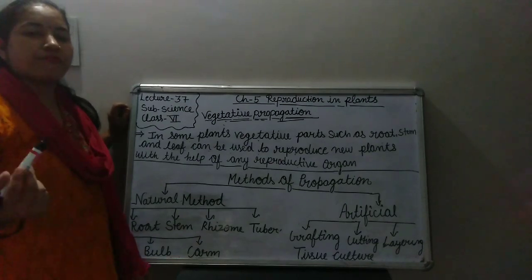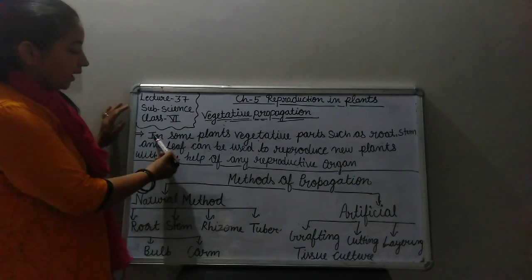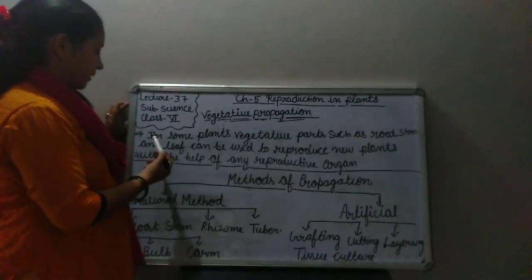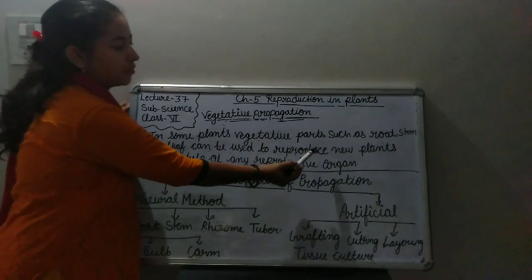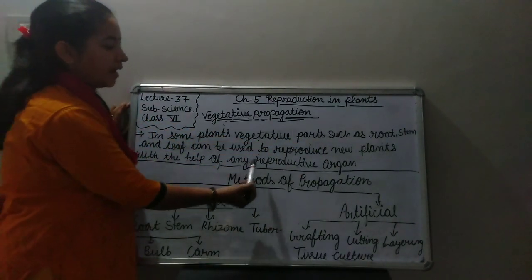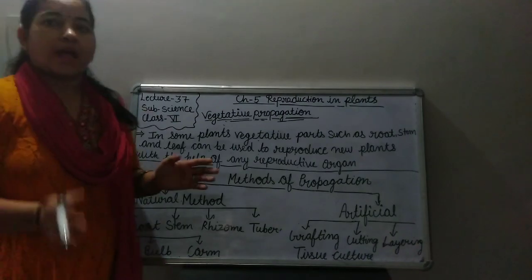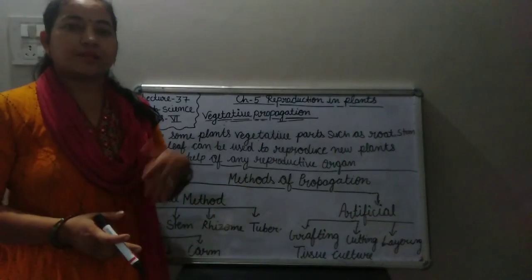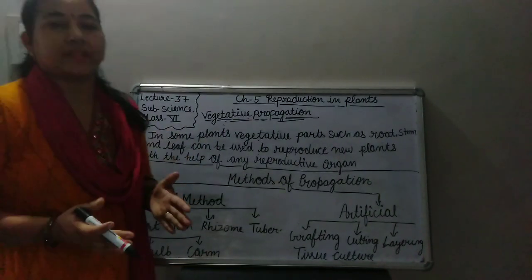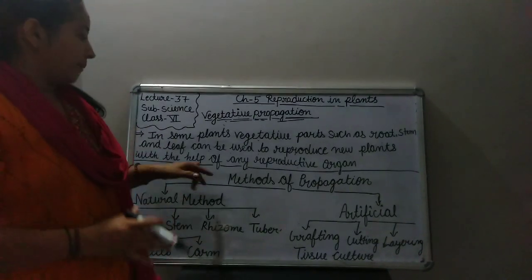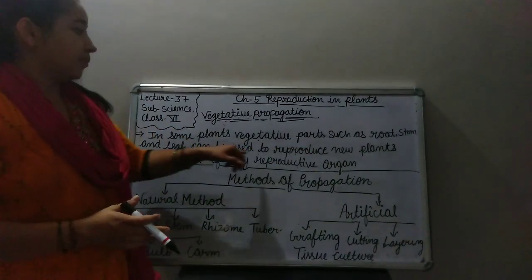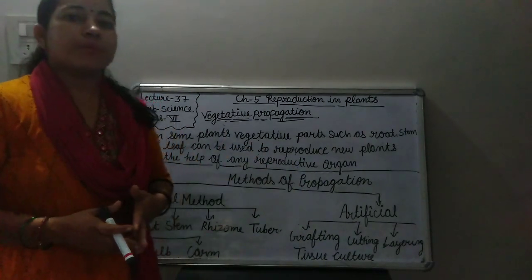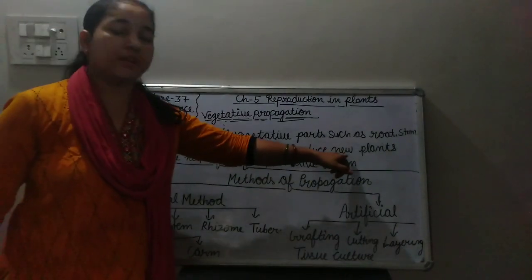First of all, what is the meaning of vegetative propagation? In some plants, vegetative parts such as root, stem, and leaf can be used to reproduce new plants. In such plants, vegetative parts like roots, stem, and leaves are the vegetative reproductive organs used to produce and grow new plants.